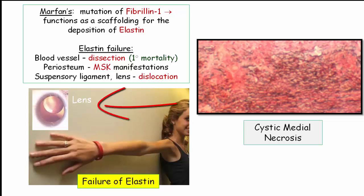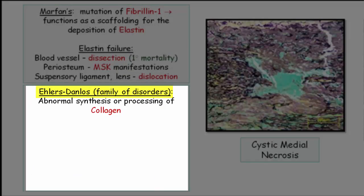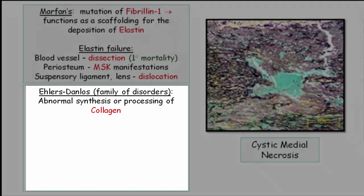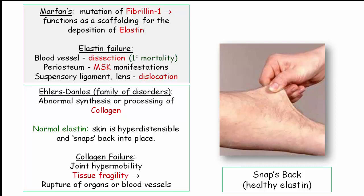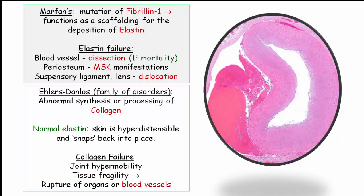Elastin is also found in the suspensory ligament of the lens, accounting for the frequent description of lens subluxation. If you consider the function of Fibrillin-1, the clinical manifestations make sense. Contrast that with the Ehlers-Danlos family of disorders — a term used to highlight that Ehlers-Danlos is not a single entity but several subtypes characterized by alterations of genes affecting the synthesis or processing of collagen. The hyperdistensible skin of Ehlers-Danlos snaps back into place, indicating elastin is intact — it is the collagen that doesn't work. Failure of collagen translates into joint hypermobility, tissue fragility, spontaneous organ rupture, or blood vessel dissection.